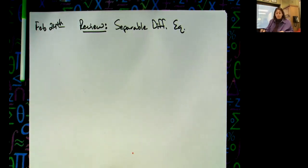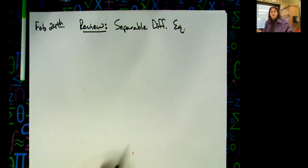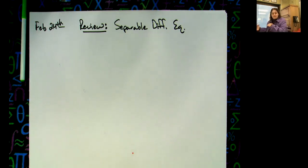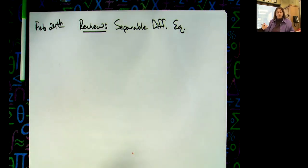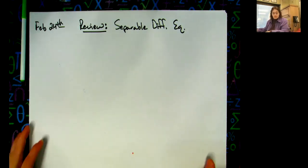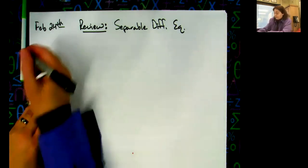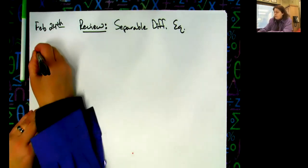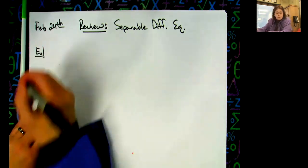Both examples I'm going to do are going to have those extra steps where we have to go from logarithmic form to exponential form, where we've got to do the 'let k equal e to the c' and throw some extra values in. You've already encountered this on your homework.